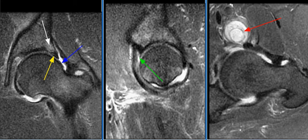The anterolateral acetabular labrum is torn, as seen on this image with green arrow. There is full thickness chondral erosion of the supralateral acetabulum with subchondral reactive edema in the adjacent acetabulum, as seen on this image with white arrow.